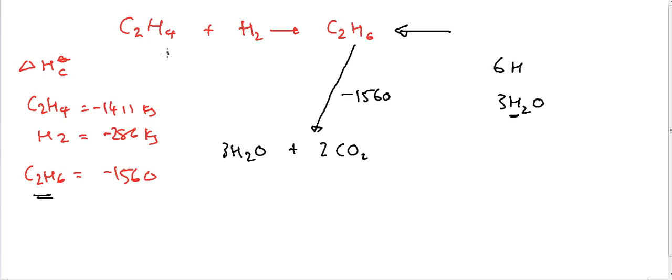What I know is that if I burn ethane — going from here to here — this will release 1,560 kilojoules per mole of energy. If I burn ethene, this will release minus 1,411 kilojoules of energy, and burning hydrogen will give minus 286 per mole.